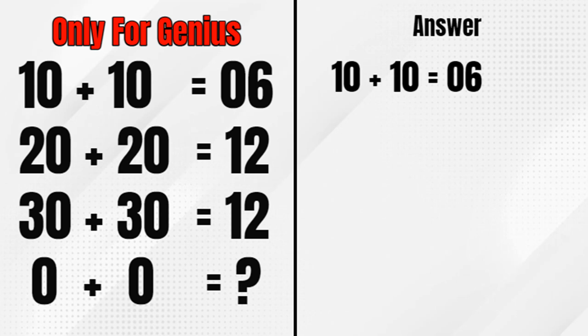So let's take the equation number one, 10 plus 10 is equal to 06. So if we write down 10 in English, which says TEN, and if we add all these alphabets, we get six letters. So 10 plus 10 is equal to 06.